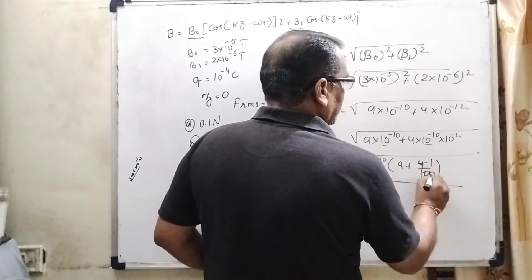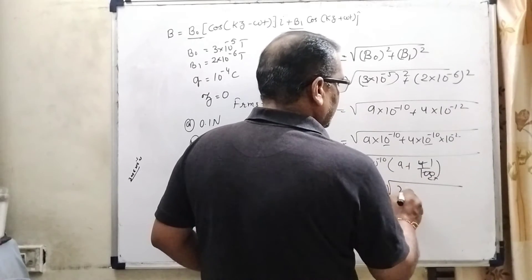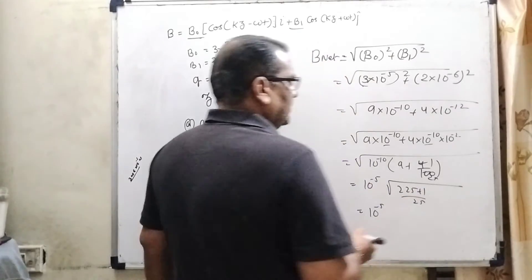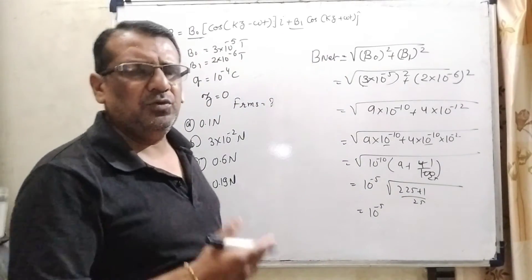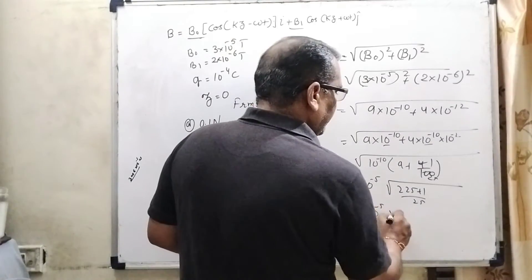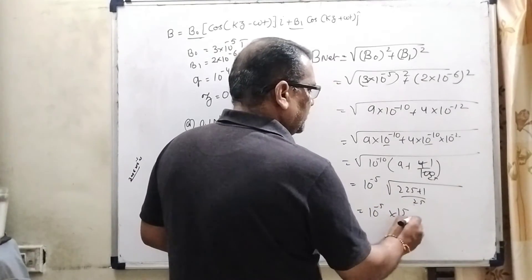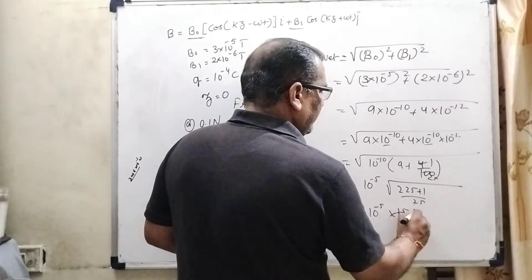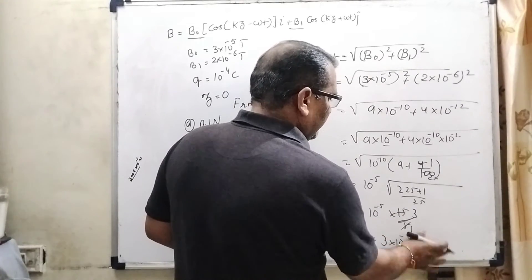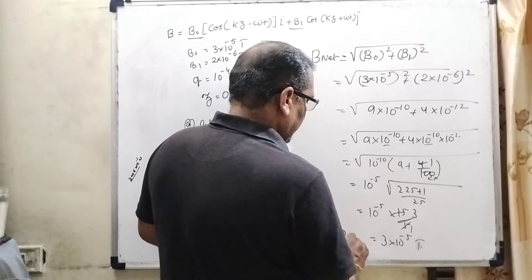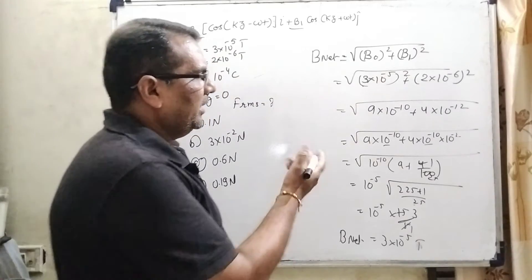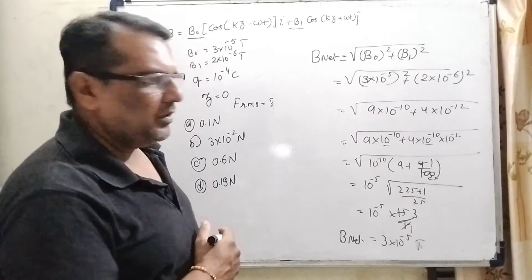So, 4 divided by 100 is 4 by 100, that is 1 by 25. So, root of 9 plus 1 upon 25. Now, you can see that 225 plus 1 is 226, but 1 can be neglected. So, 225, the root is 15, and 25, the root is 5. So, 5 divided by 5 gives 15 divided by 5. So, 3 into 10 to the power minus 5 Tesla, that is the net magnetic field. So let us see how the calculation will be easy.